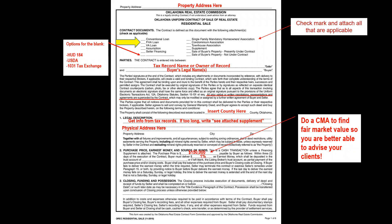A good rule of thumb for earnest money is one percent of the purchase price. So on a $150,000 house, the buyer may put up $1,500 in earnest money. Keep in mind that buyers and sellers can agree to any amount — zero, more, or less — but one percent is a good starting point.